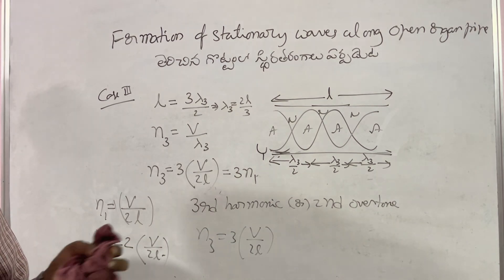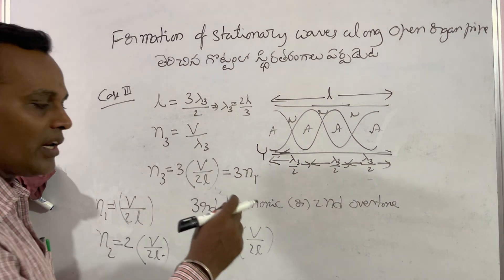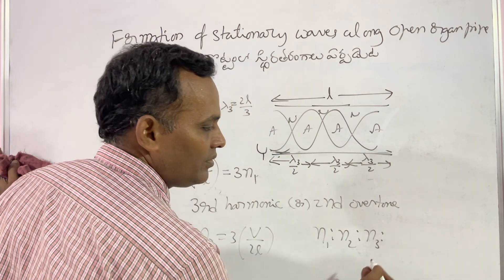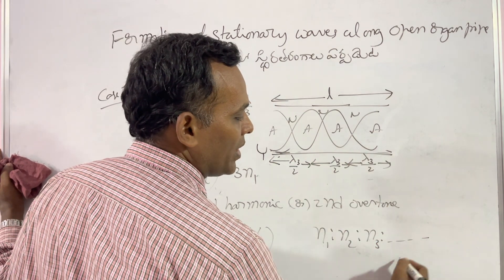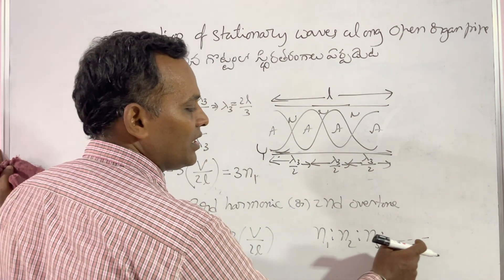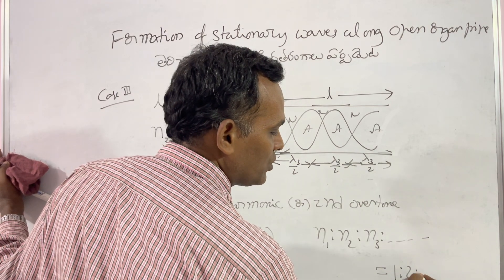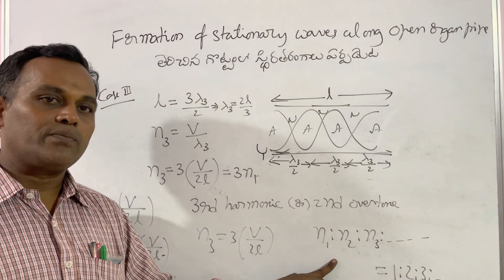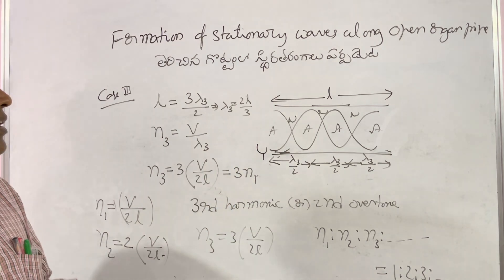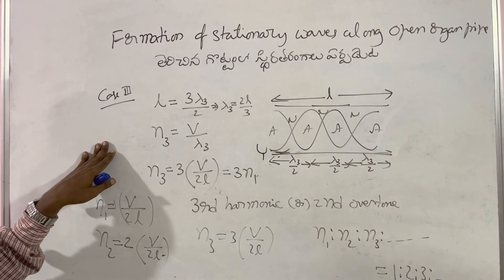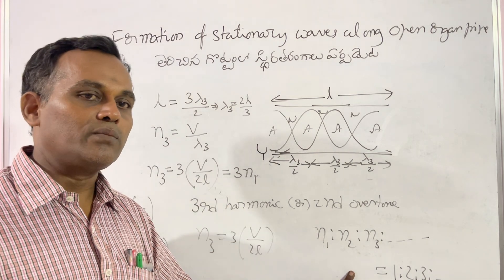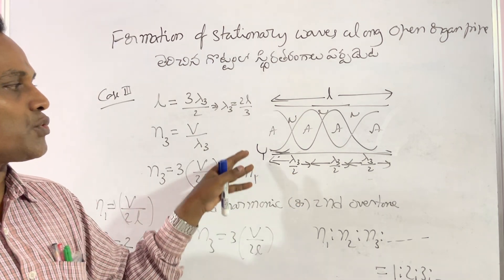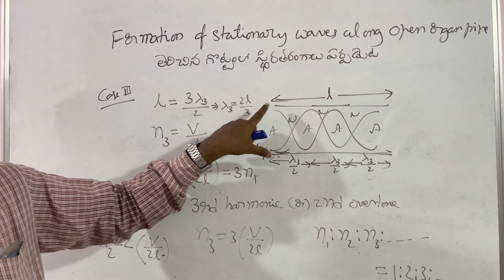Like this, we get many harmonics. The important result is that the ratio of harmonics of vibrations in an open pipe is: n1 : n2 : n3 : ... = 1 : 2 : 3 : ... The metal pipe which opens at both ends is called an open organ pipe or open pipe.